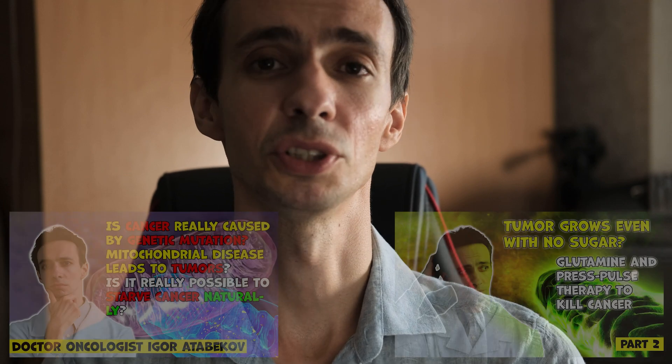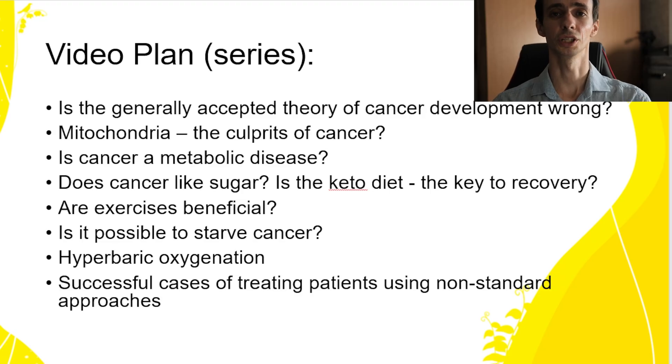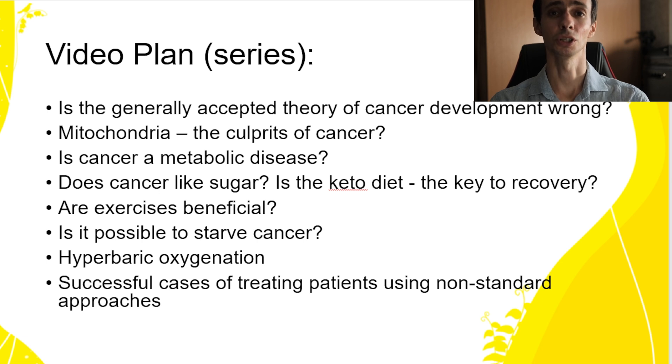We are continuing our topic on adjunctive methods on the metabolic theory of cancer development and metabolic approaches of cancer treatment. Our traditional oncological approaches have a lot of toxicities and they are not always effective. We can help only a small number of patients, and I am always searching for something that can help those patients. If you didn't see the previous two videos, watch them first, because you won't understand this fully. Today we are talking about other approaches — how else can we hit the tumor? The tumor is very good at surviving and we need to hit it from many different sides in order to win this battle.